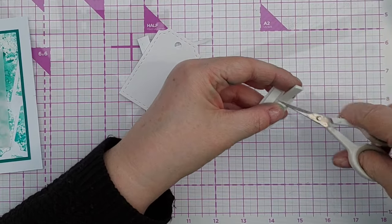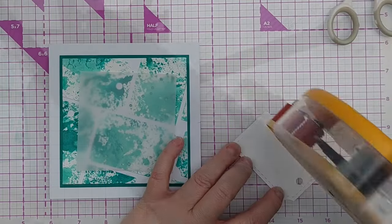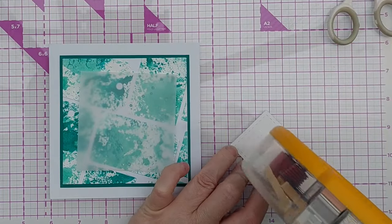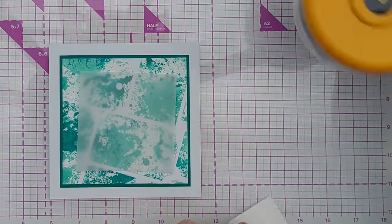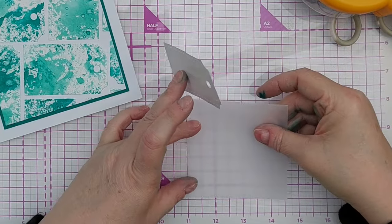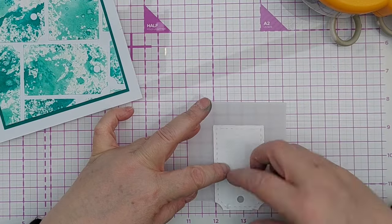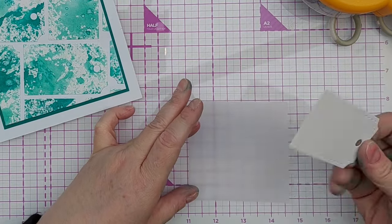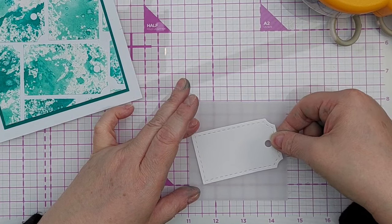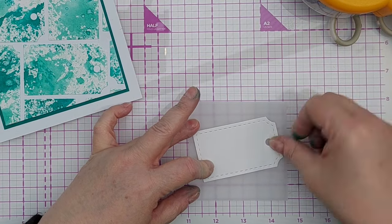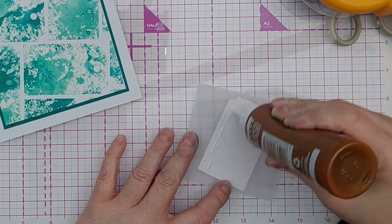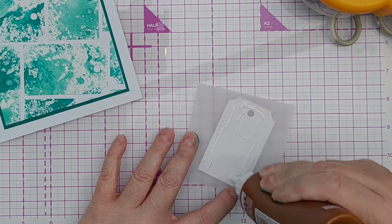I then added craft foam to the back of the sentiment because I wanted it to be raised up a bit. And then I used one of my plain uncolored tags and added that at a jaunty angle to the piece of vellum, the square piece of vellum. I then put glue on the back where it wouldn't be seen and centered that vellum in the middle of my panel.